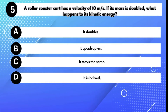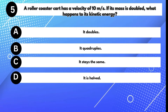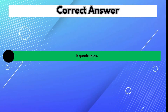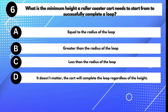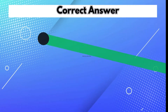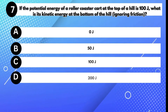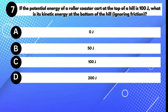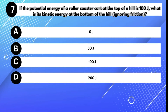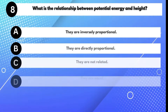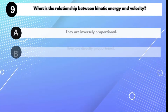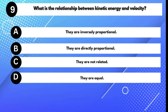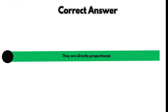A roller coaster cart has a velocity of 10 m/s. If its mass is doubled, what happens to its kinetic energy? Answer B: It doubles. What is the relationship between potential energy and height? Answer B: They are directly proportional. What is the relationship between kinetic energy and velocity? Answer B: They are directly proportional.